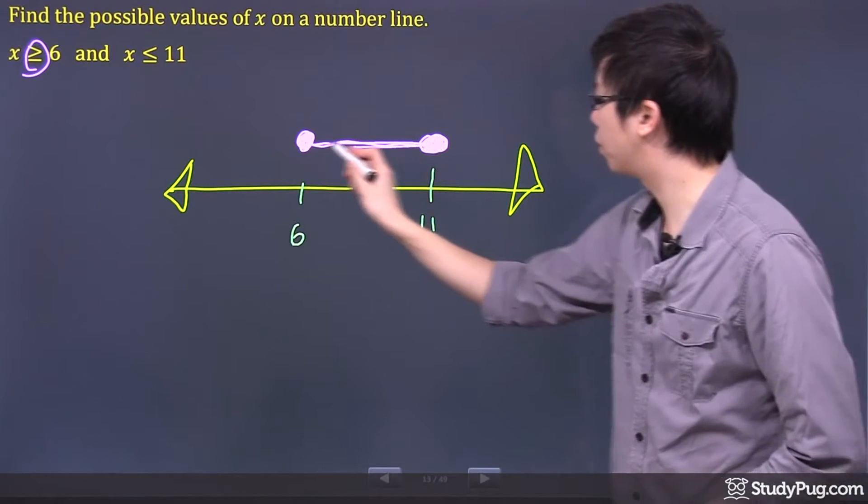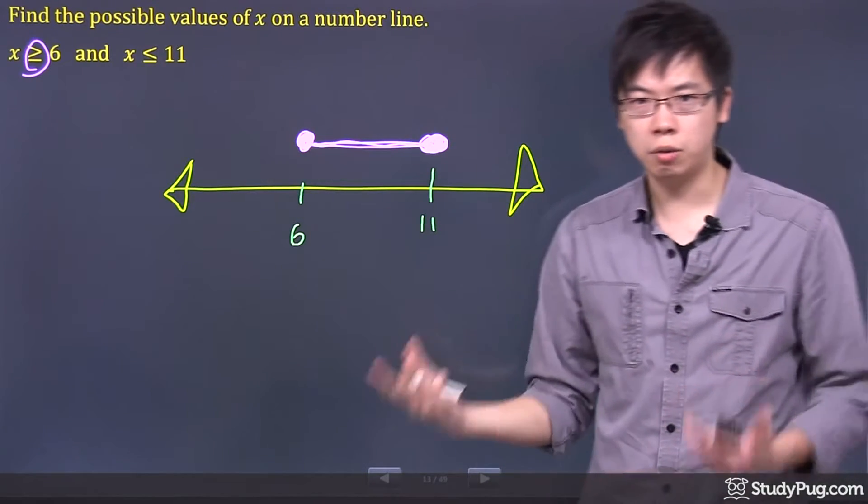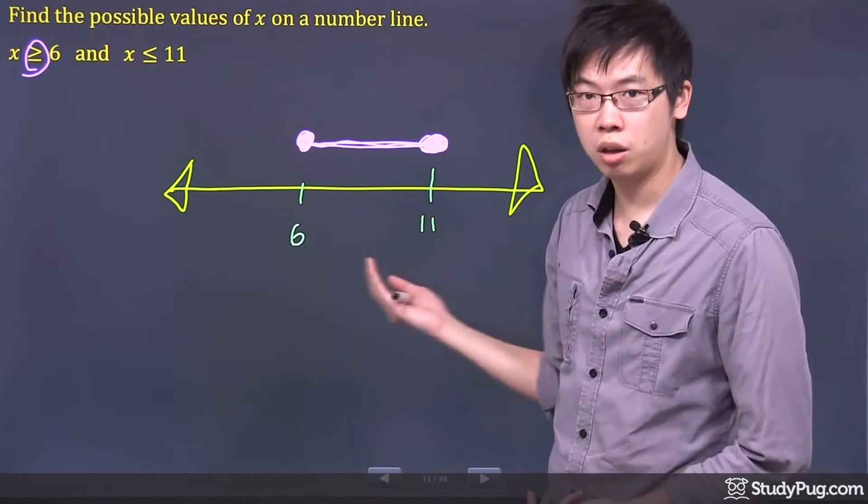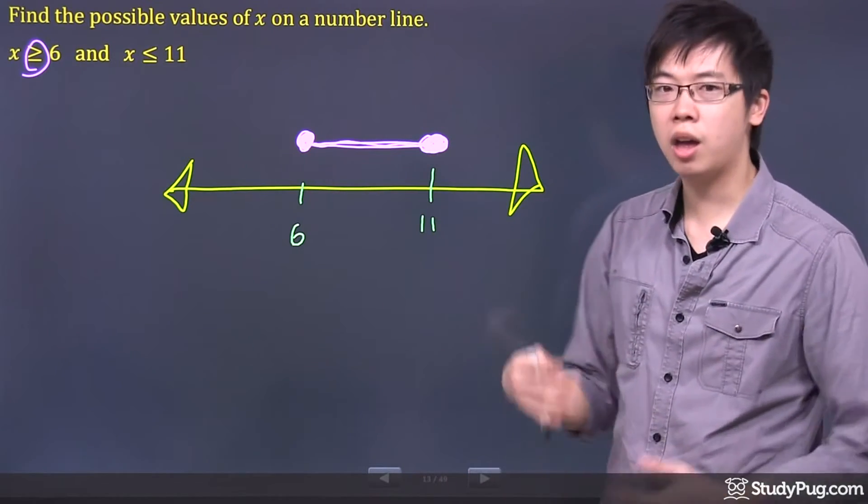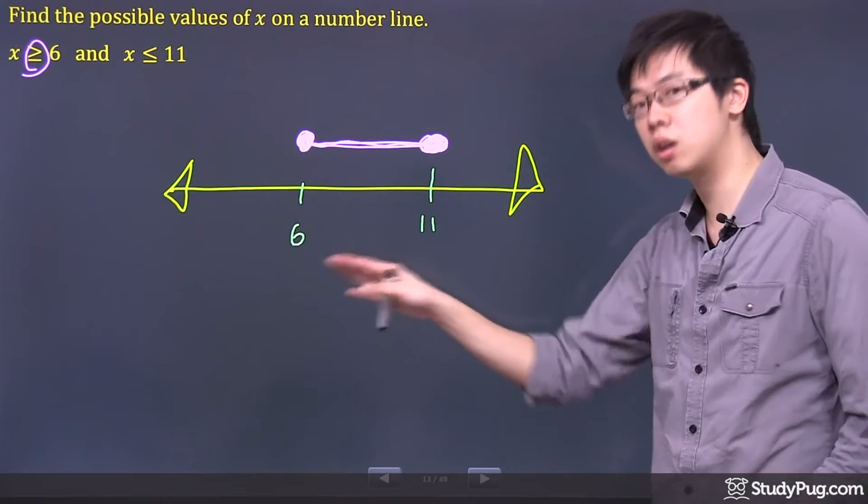There's your number line right there. That will represent all the possible numbers between the 6 and 11, which includes like 7, 8, 9, 10, and 10.5, any numbers between the 6 and 11, inclusively.